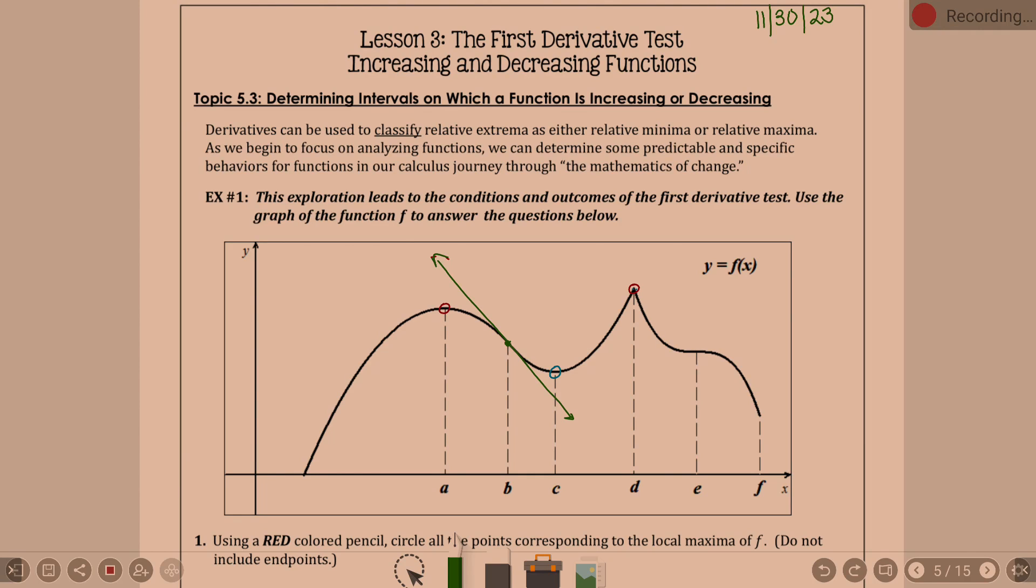Tangent line at what else did we say? D. Does not exist. I can't do a tangent line at d because it is a sharp point, cusp, hard point. Tangent line at e. Tangent line at e is going to be a horizontal line. Slope of zero? Yes.